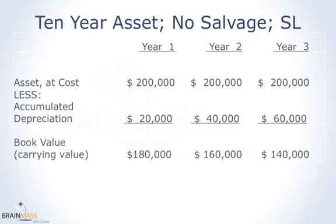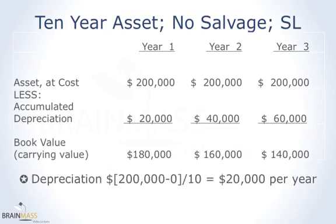Let's imagine that we have a $200,000 asset. When we purchase it, we think it's going to last 10 years and have no salvage value, and we're going to use the straight-line method of depreciation. Here is the calculation of depreciation when you buy it: cost minus salvage divided by the 10-year life equals $20,000 per year. You can see years one, two, and three already done. The accumulated depreciation grows each year by the $20,000 depreciation expense.